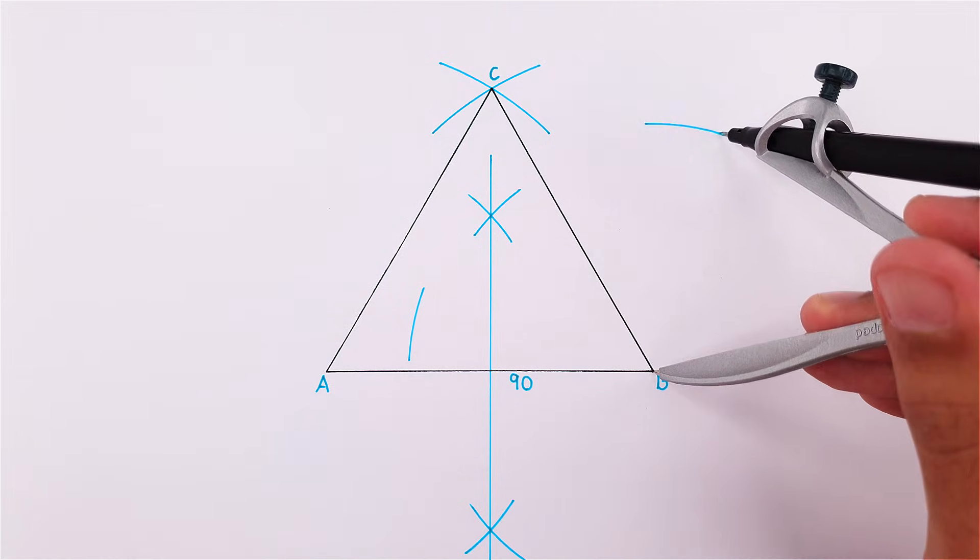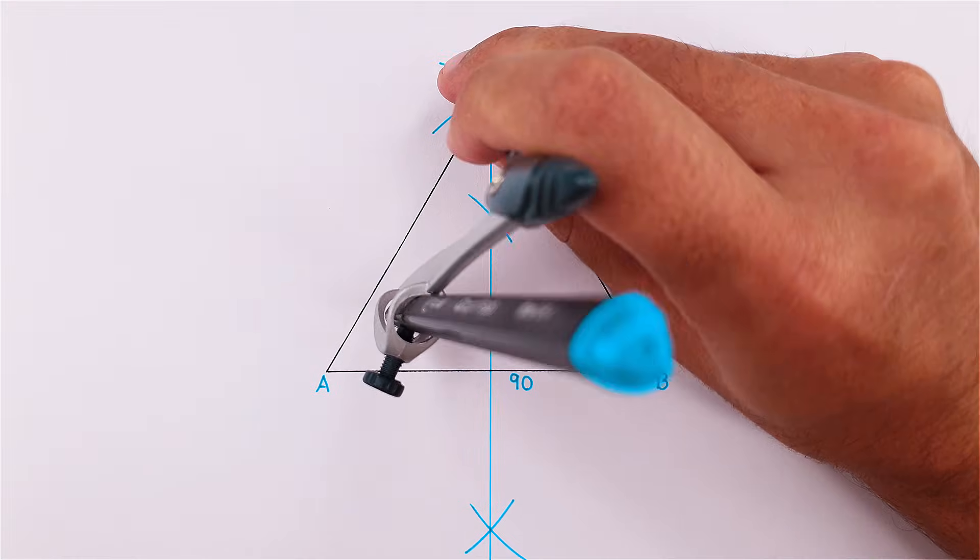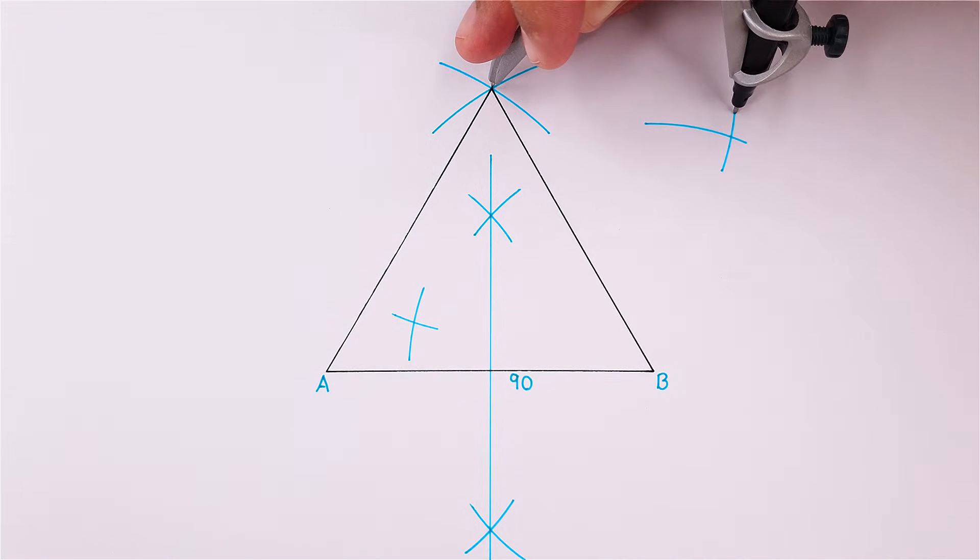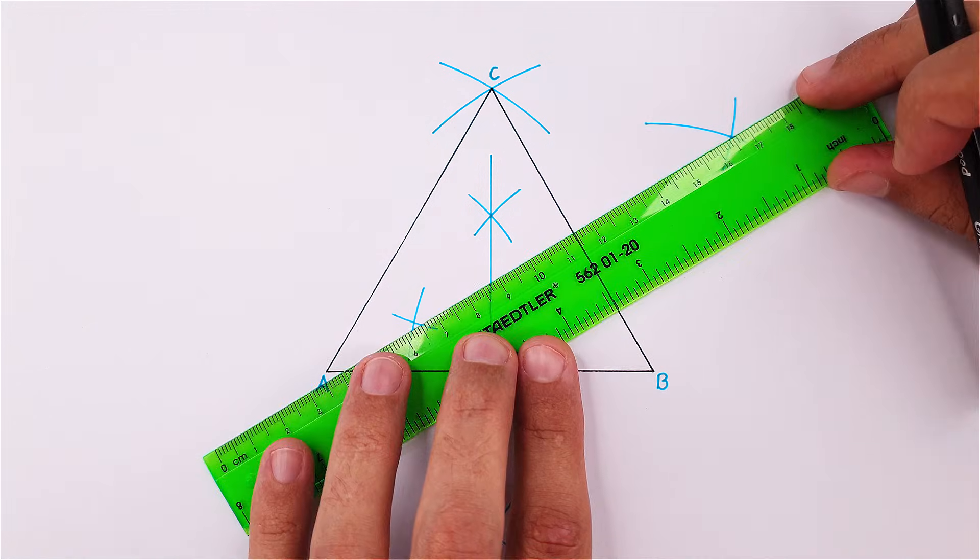Using this same measurement, place your compass on point C and draw your last two arcs as seen in the video. Complete your bisector by drawing a line through these two intersecting points.